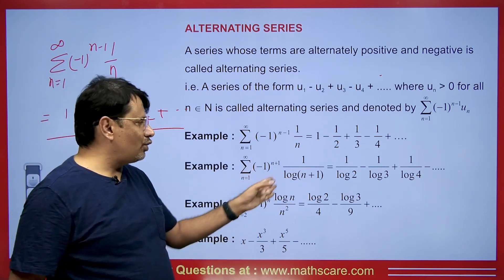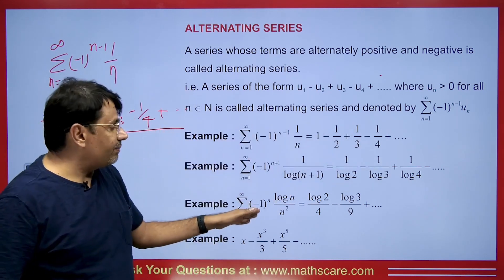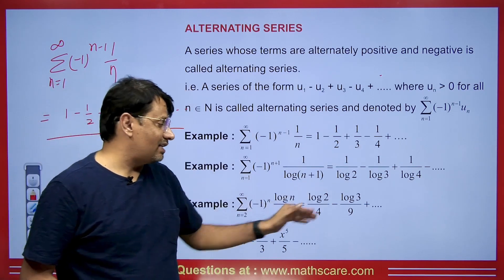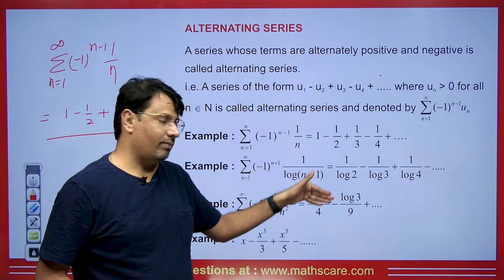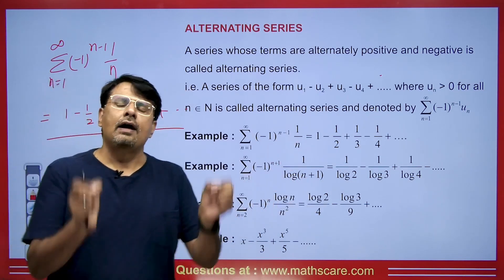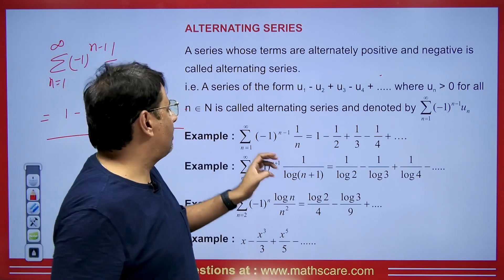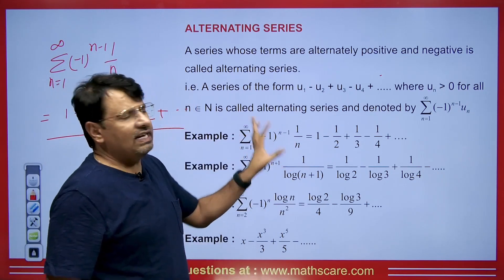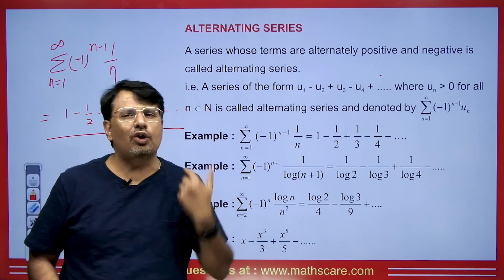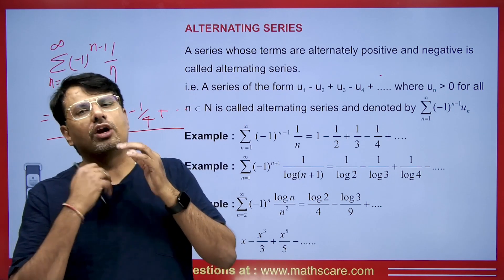For another series, consider terms like log n divided by n squared, where n ranges from 1, 2, 3 and so on — this will also be an alternating series. So how will we know if it is an alternating series? If the summation includes a term like minus 1 raised to the power n, n minus 1, or n plus 1, then this is known as an alternating series.